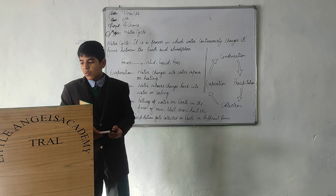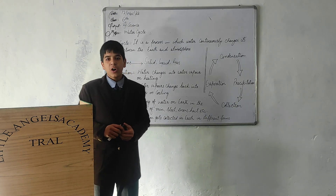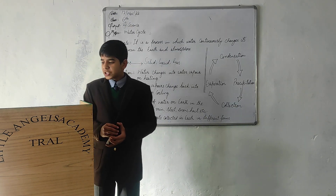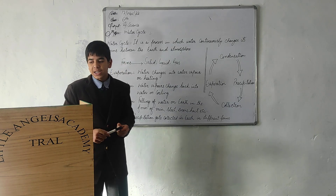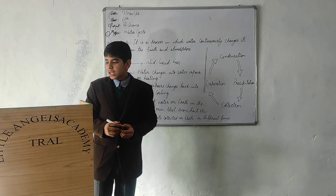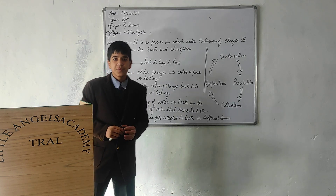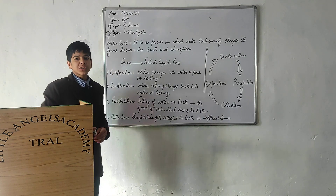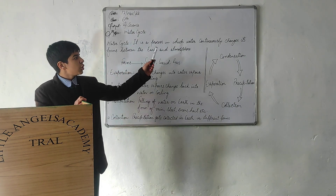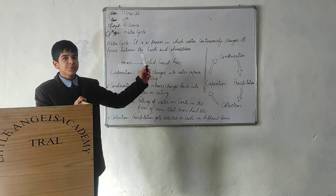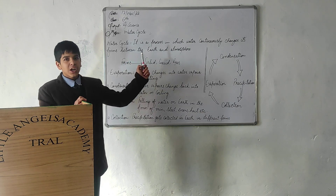As we all know, water is important for the survival of life on earth. We must also be knowing that it can be replenished all the time through the water cycle. What is water cycle? It is a process in which water continuously changes its forms between the earth and atmosphere.